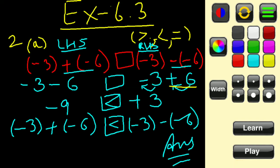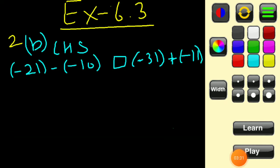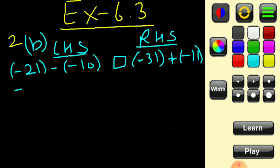Now let's discuss question number 2, part b. The left hand side is minus 21, and we solve the left hand side and right hand side separately. Minus 21 is written as it is.